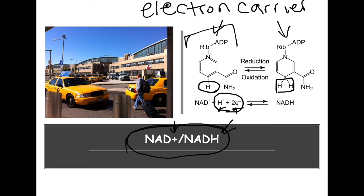I call NAD the taxi cab. The reason I say that is because NAD, when it picks up electrons, shuttles them to the electron transport chain — just like a taxi cab brings people to the airport and drops them off. So does NAD the taxi cab: it picks up electrons and drops them off at the cell's airport, which I like to call the electron transport chain. Then it goes back to pick up more electrons and bring them there — it keeps going back and forth like that.